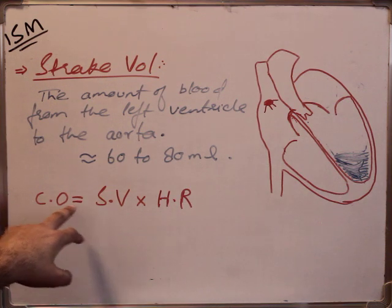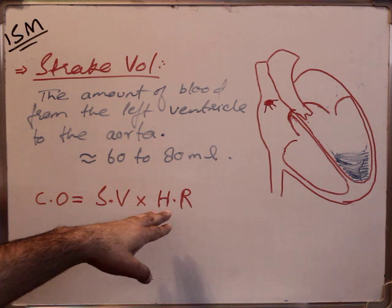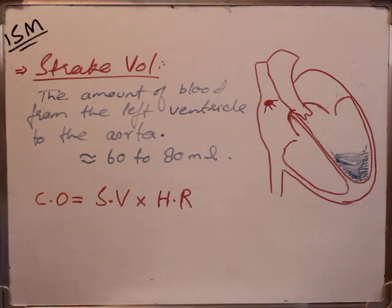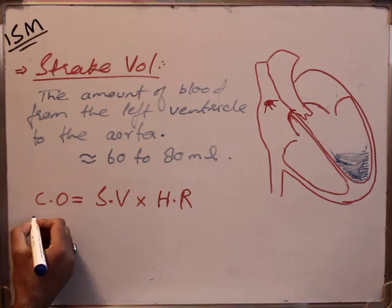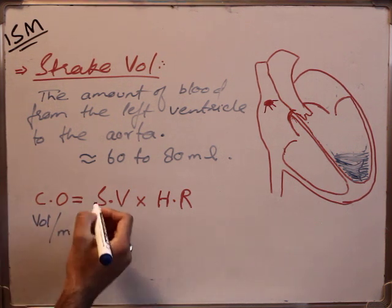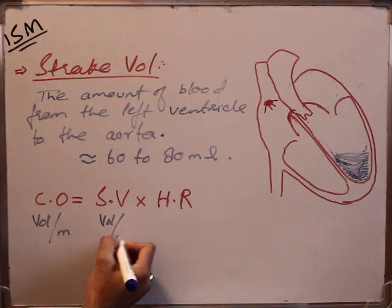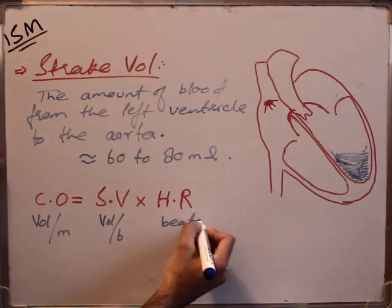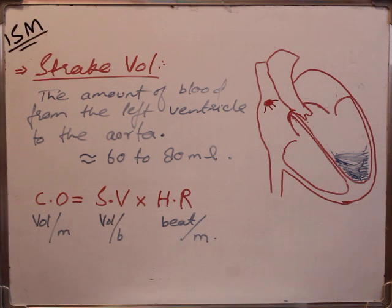When stroke volume increases and the heart beats in a fast fashion, more blood is ejected out of the heart, so cardiac output increases. Cardiac output is directly related to heart rate. In general, cardiac output is volume per minute, stroke volume is volume per beat, and heart rate is number of beats per minute. This is the general formula for cardiac output.